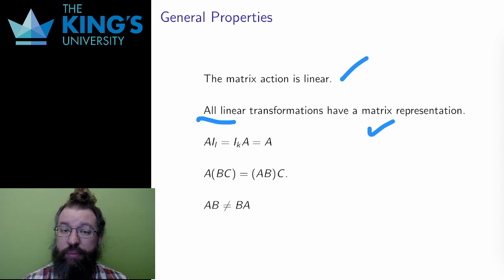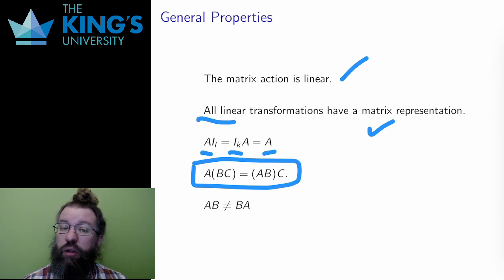There is an identity matrix in each size that does nothing in composition or equivalently in matrix multiplication. Matrix multiplication is associative, but in general, matrix multiplication is not commutative.